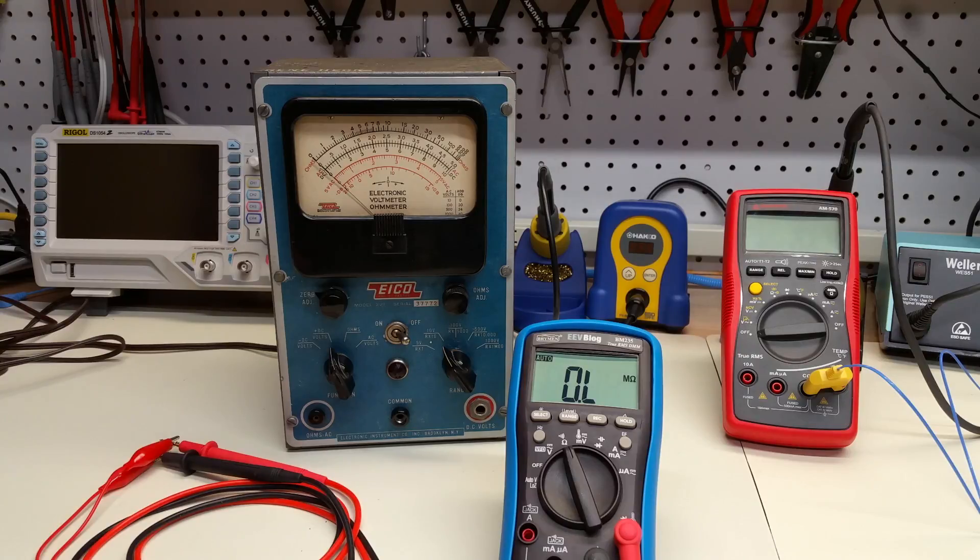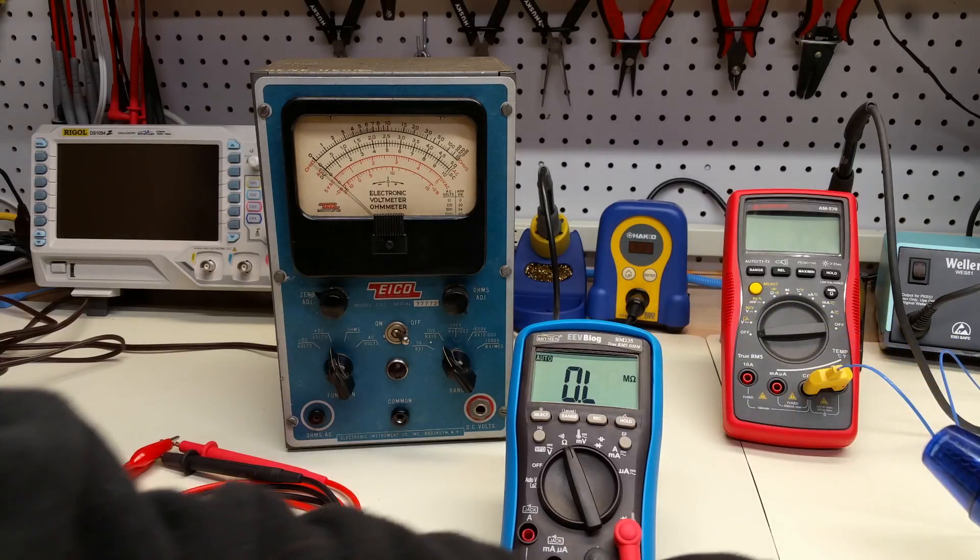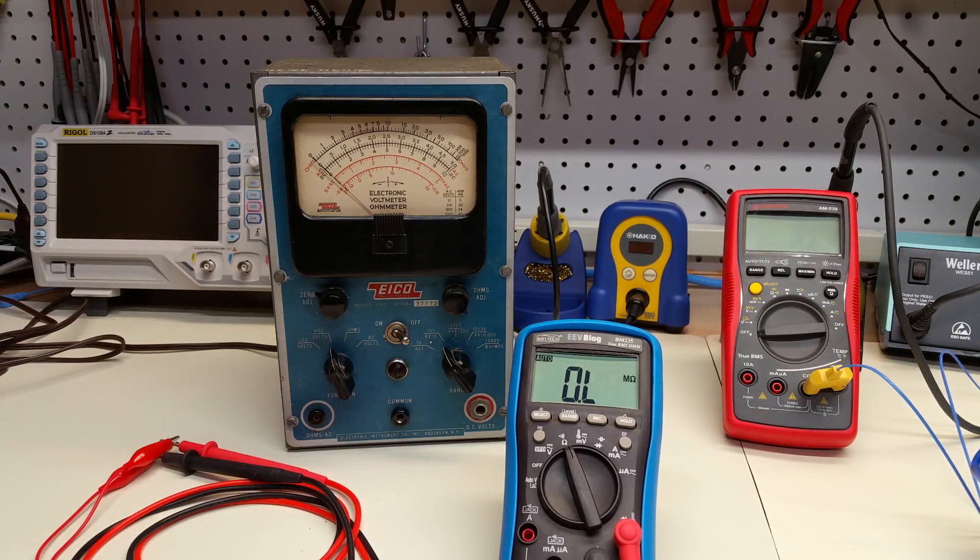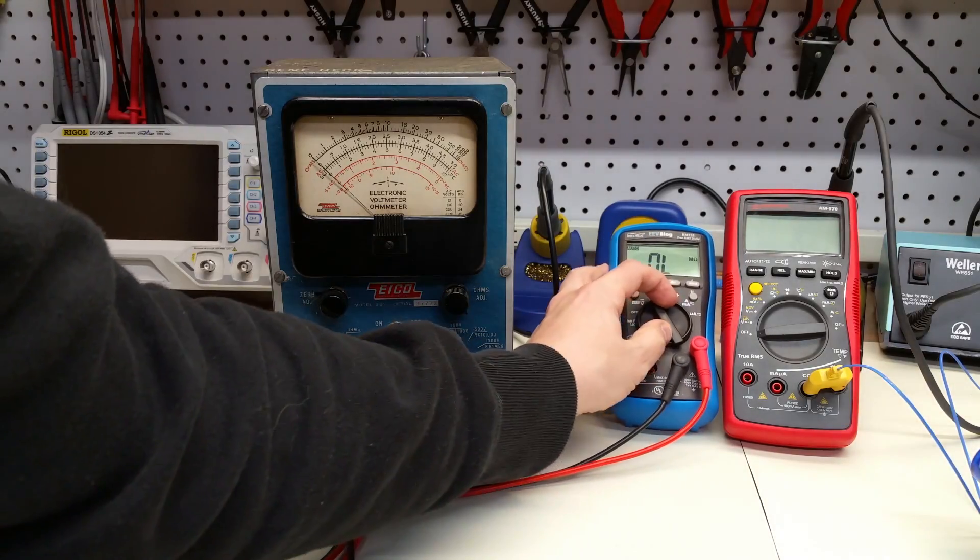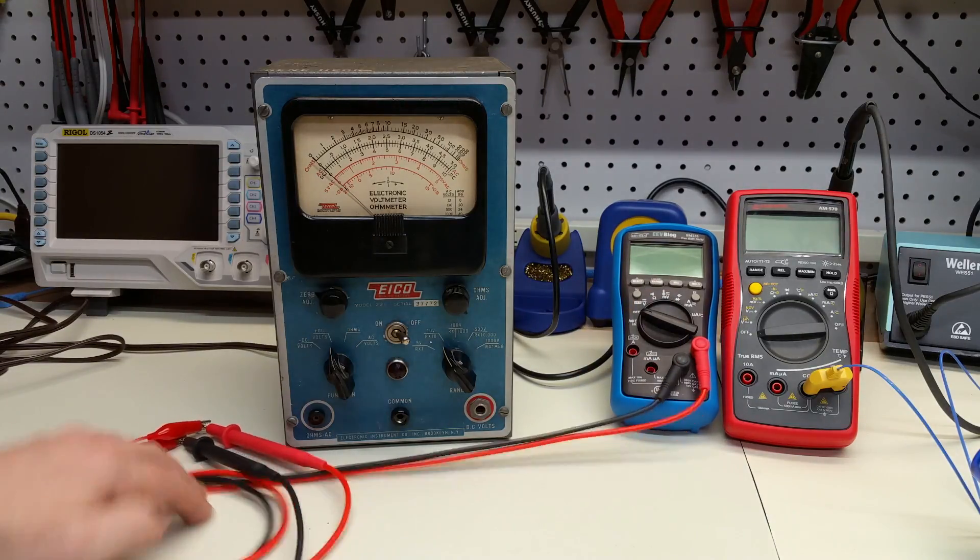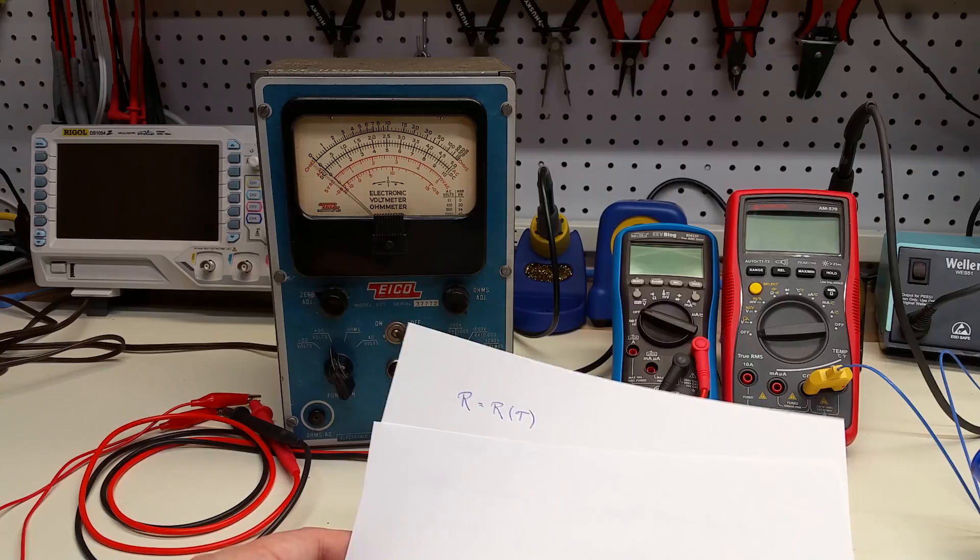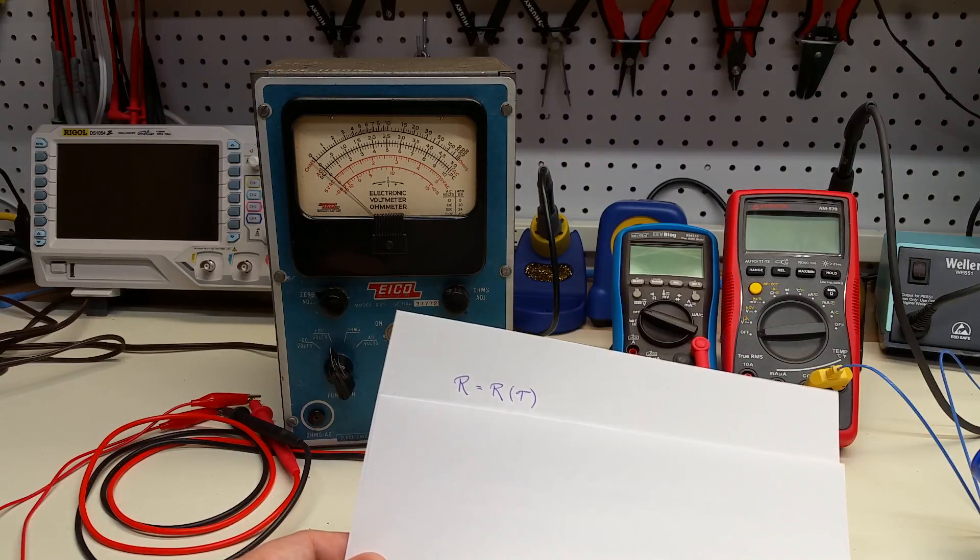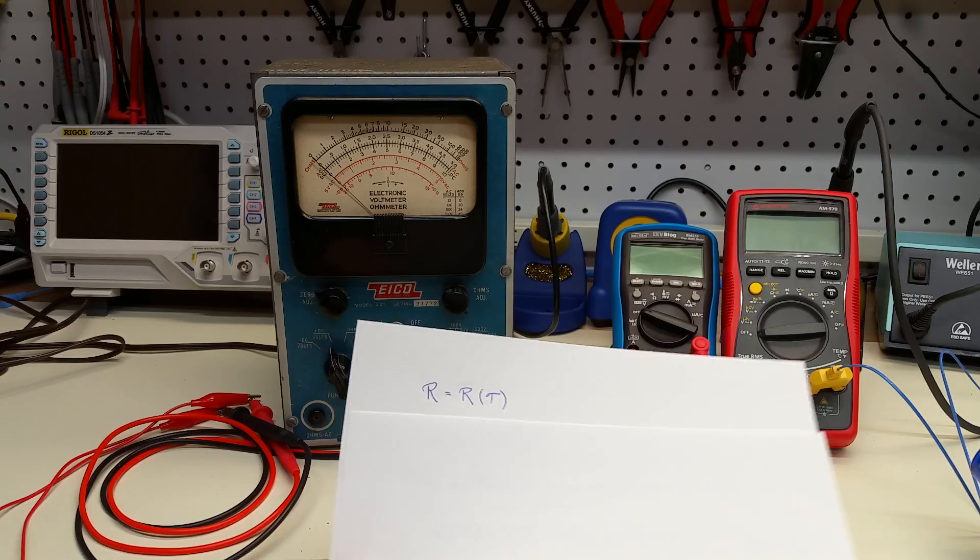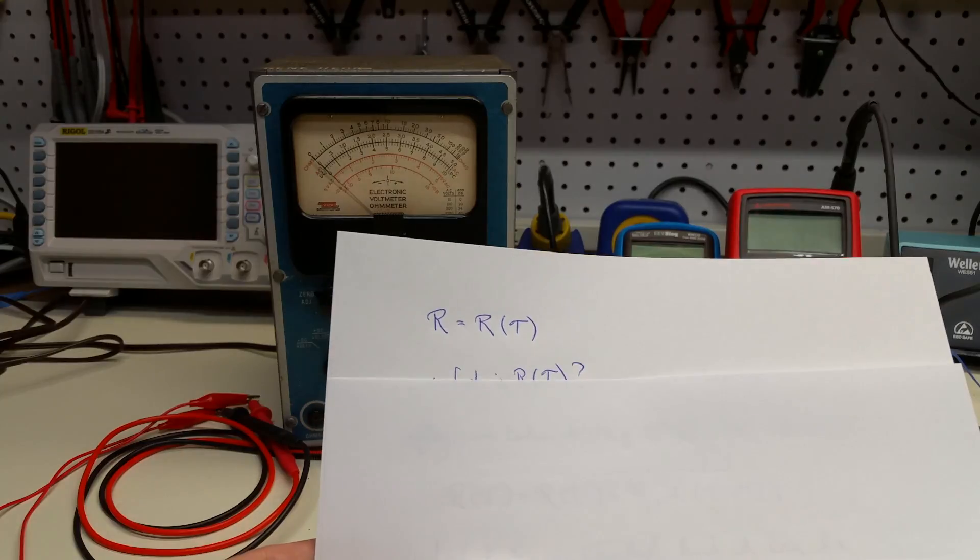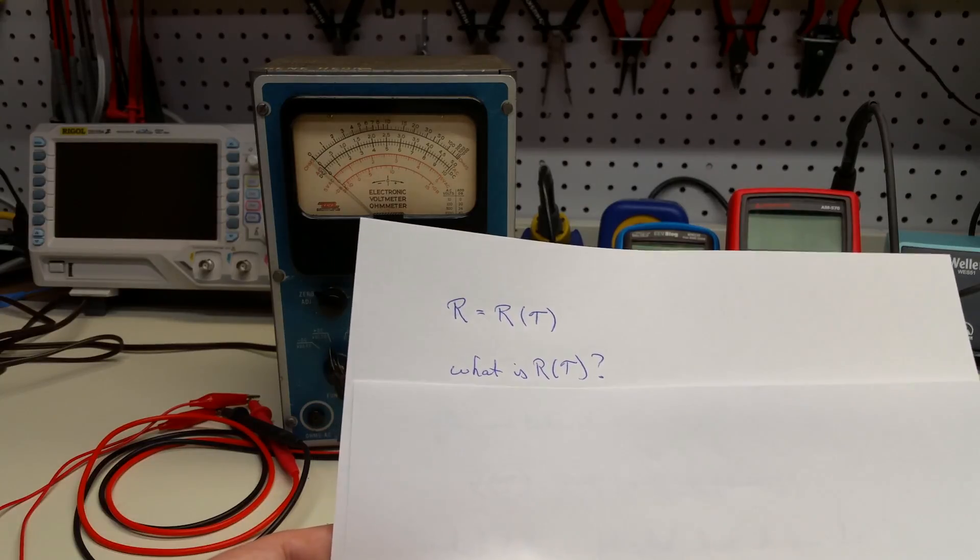But we can ask kind of a more quantitative question, which is how exactly does the resistance change when the temperature changes by smaller amounts? I mean, remember, this thing can really blast out the heat. It probably goes up to 300 degrees C or more. So let's move this aside, turn it off. And we can ask, we just showed that the resistance is a function of temperature. So R is some function of temperature, R of T. But the question is, what is that function?